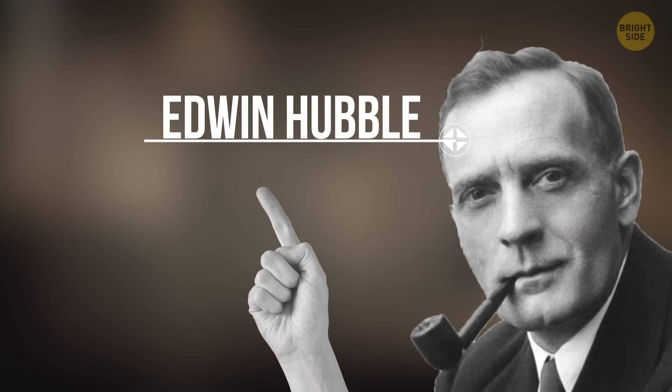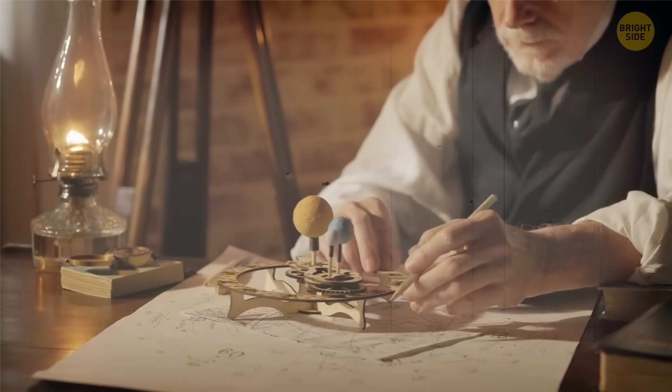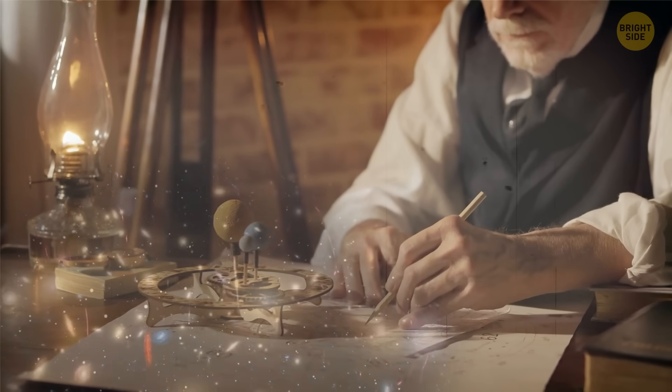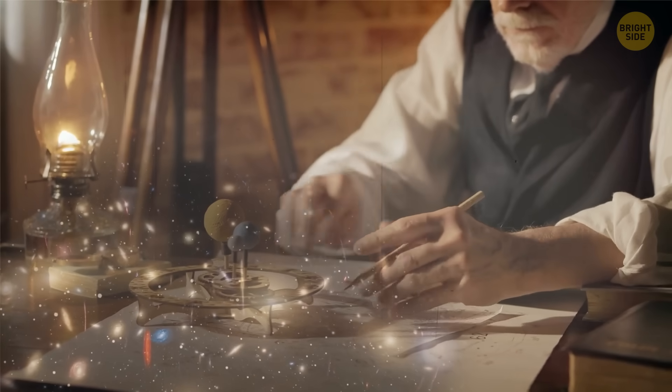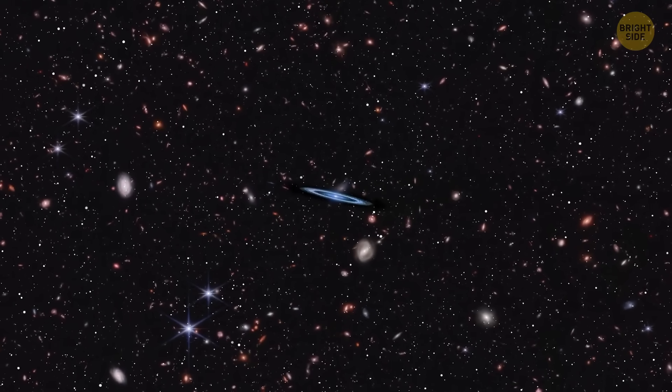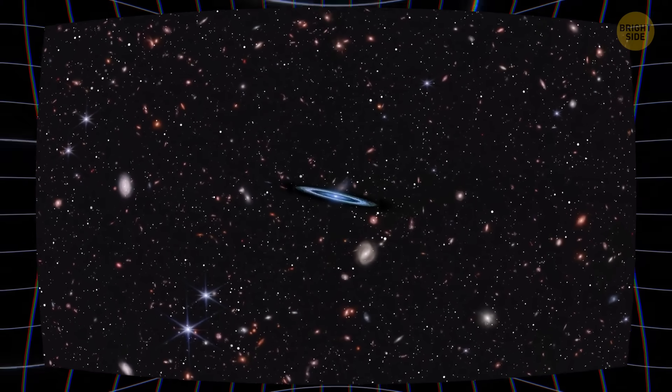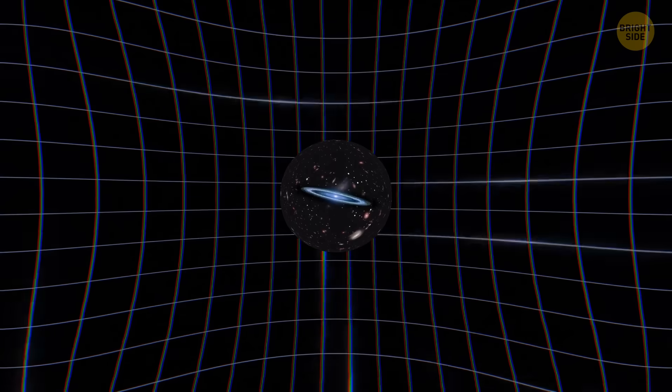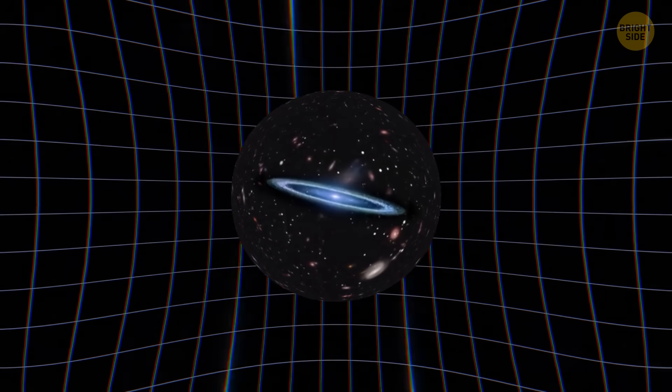Then came Edwin Hubble. He observed the universe in the telescope and realized the light that came to our planet was coming from galaxies that were moving farther away from us. The galaxies weren't sitting still. The whole universe was moving. And this became one of the most revolutionary discoveries in history.